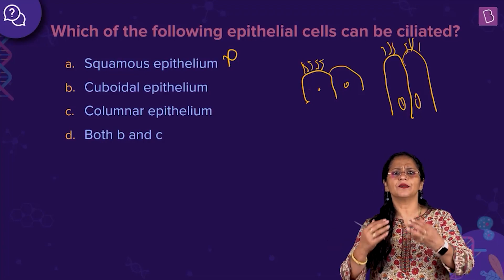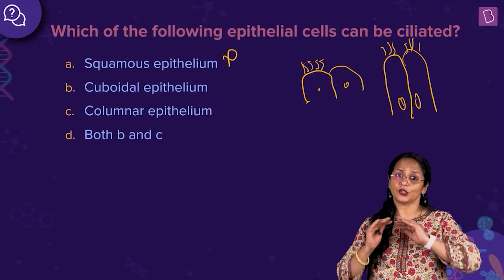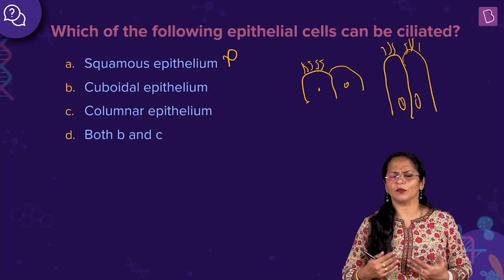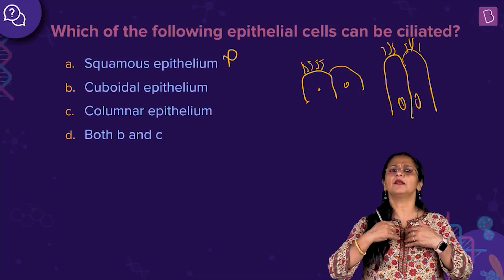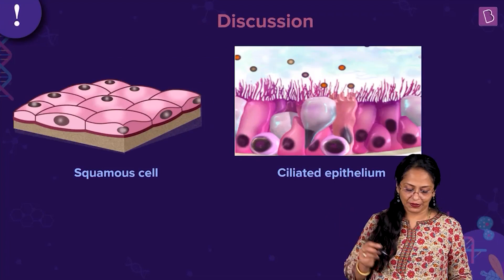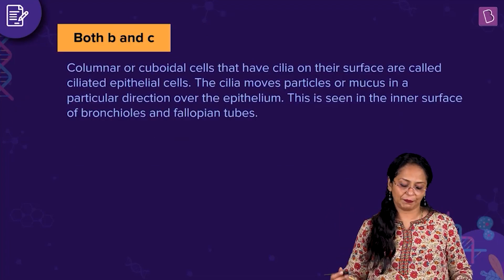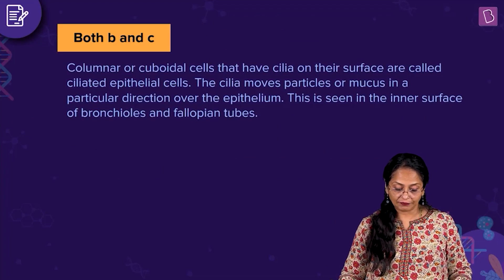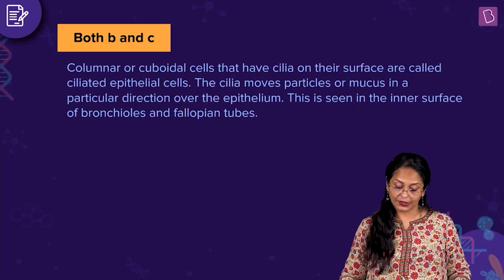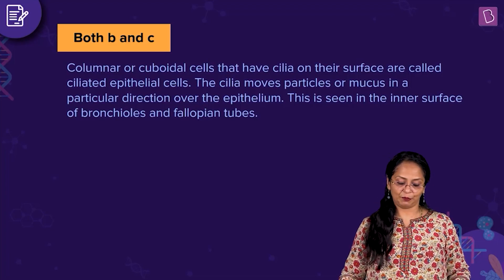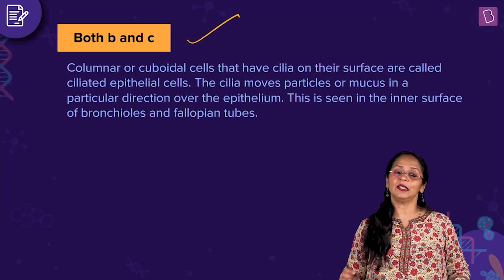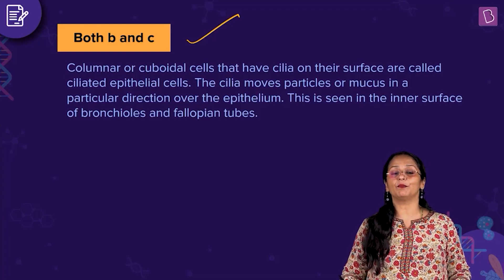The fallopian tube uses cilia to push the ovum released from the ovaries through the tube into the uterus — in one direction. In the bronchioles, you cannot afford to have dust particles reaching your alveoli, so cilia push them out — the mucus binds it and pushes it out. So the correct answer is both B and C, found in both cuboidal and columnar. Columnar or cuboidal cells with cilia on their surface are called ciliated epithelial cells. The right answer is D — both B and C.